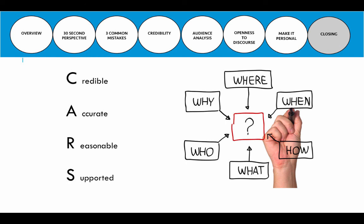In closing, ask yourself for every source you use: does it match the CARS checklist — is it credible, accurate, reasonable, and supported? If it is, include it in your speech. And when you include it, provide an oral citation. It's not good enough to just state a statistic; you need to answer: who said it, what did they say, how did they say it, when did they say it, where was it, and why is it important? If you implement that into your source information and source credibility, you're likely to have a much more persuasive presentation.